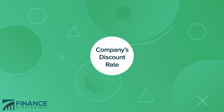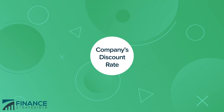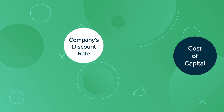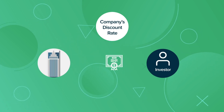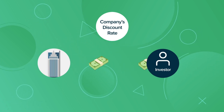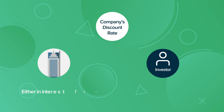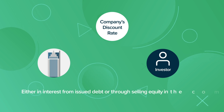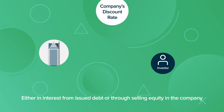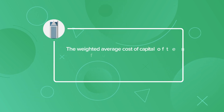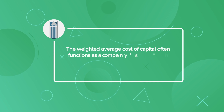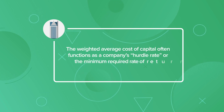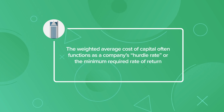A company's discount rate is typically derived from its cost of capital, or the cost a company pays investors in exchange for capital, either in interest from issued debt or through selling equity in the company. The weighted average cost of capital often functions as a company's hurdle rate, or the minimum required rate of return.